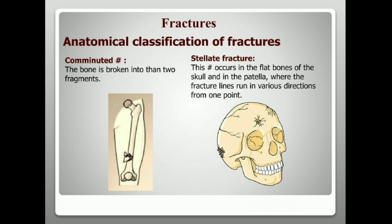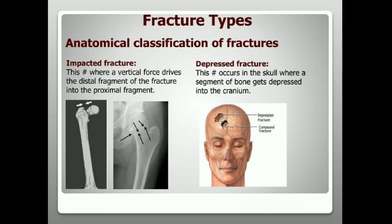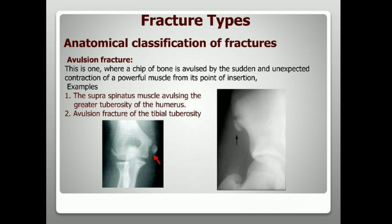On the basis of anatomy, fractures are classified as follows. A comminuted fracture is one where the bone is broken into more than two fragments. Stellate fractures occur in flat bones such as the skull and patella, where fracture lines run in various directions from one point. An impacted fracture is where a vertical force drives the distal fragment into the proximal fragment. A depressed fracture occurs in the skull where a segment of bone is depressed into the cranium. An avulsion fracture is where a chip of bone is avulsed by sudden contraction of a powerful muscle from its point of insertion.